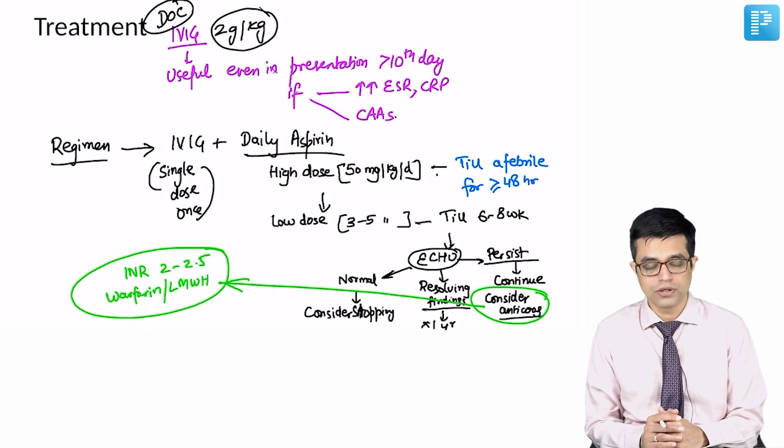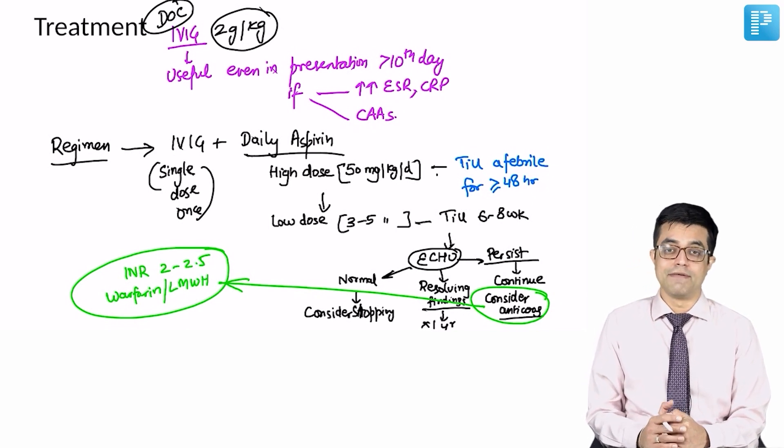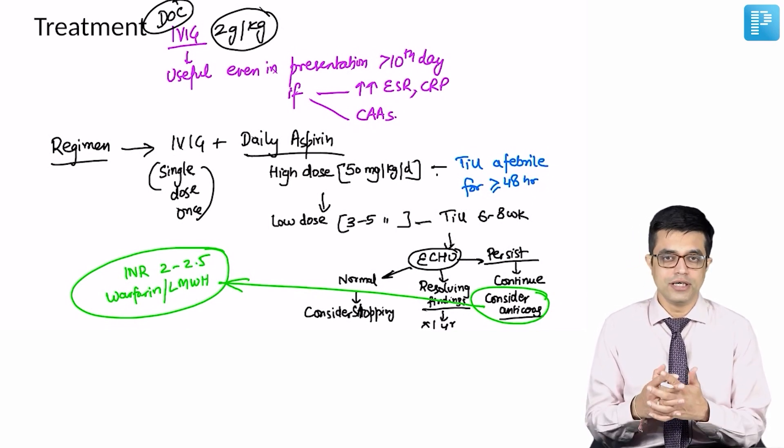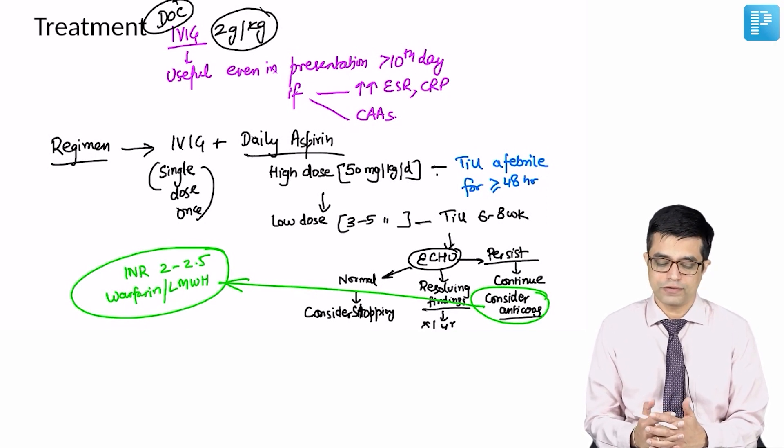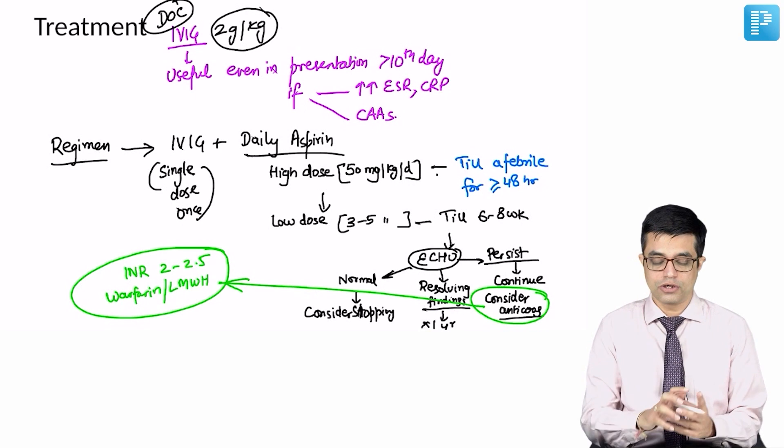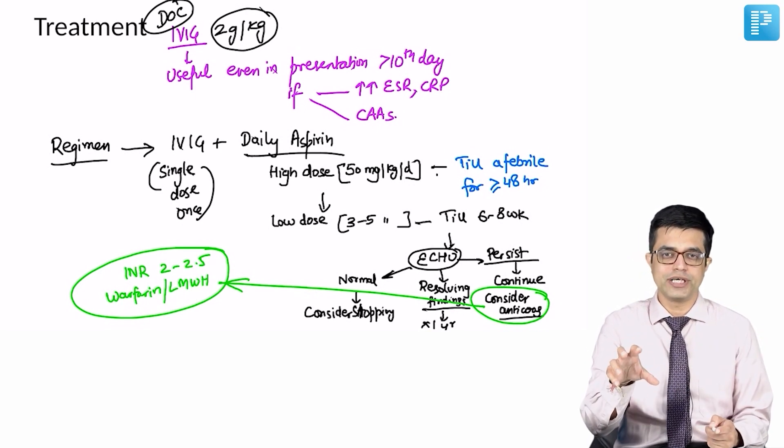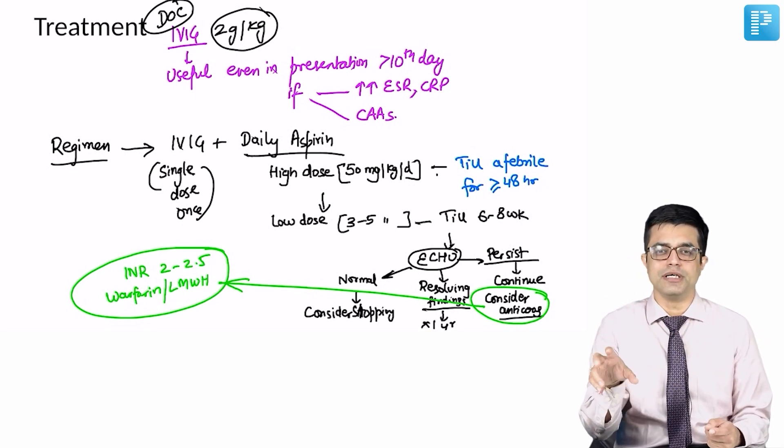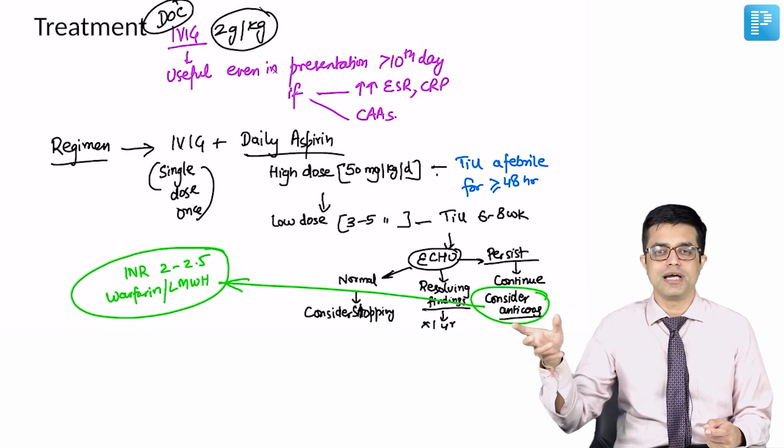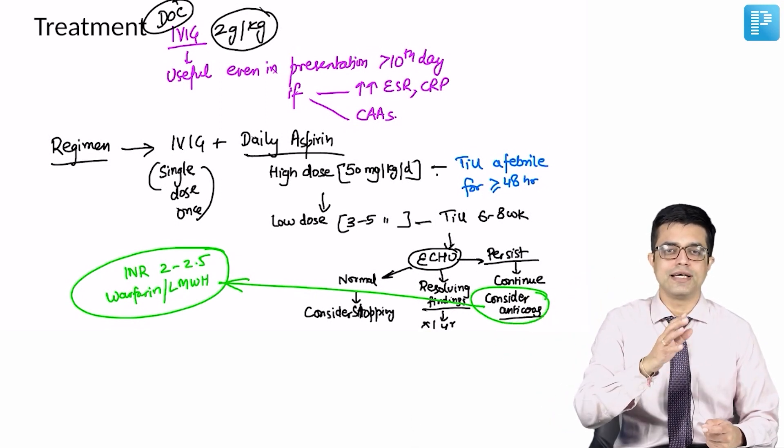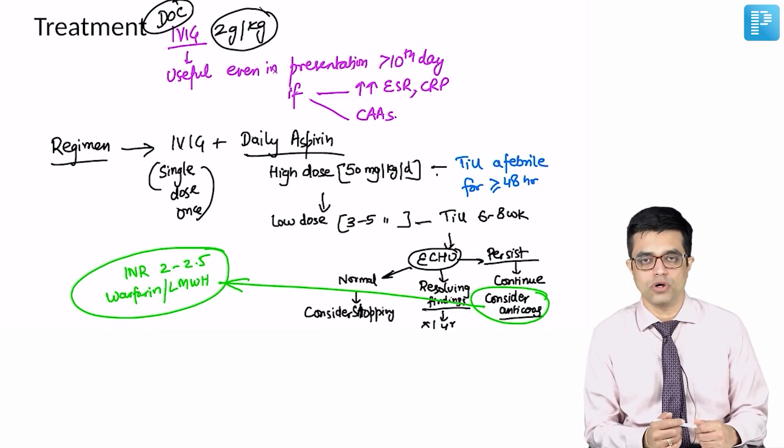Since you are giving aspirin for a long duration, children will have an increased risk of Reye syndrome. Yearly influenza vaccination is also recommended in patients who have Kawasaki disease. So, drug of choice IVIG, treatment of choice IVIG with aspirin. Aspirin, high dose initially till patient afebrile, low dose after that and then you stop it if subsequent echo findings are normal.